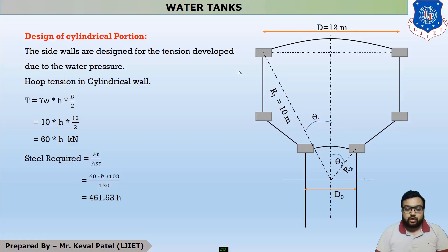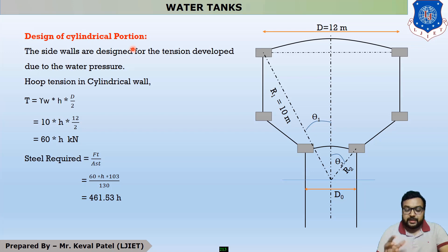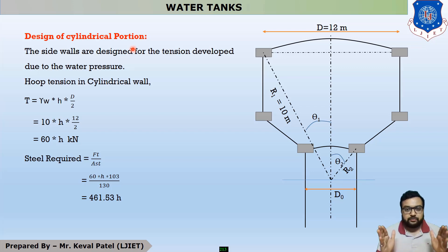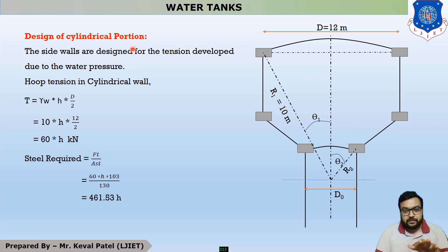Hello everyone. This is the fourth lecture of our example number one, which is the design of an intze type water tank. Let us start step number three: component design number three. Our third component design is the design of the cylindrical portion. In the first lecture of this example, we found out the preliminary dimensions, where we first assumed the diameter of the cylindrical portion, then found all other components except the height, and finally determined the height of the cylindrical portion.